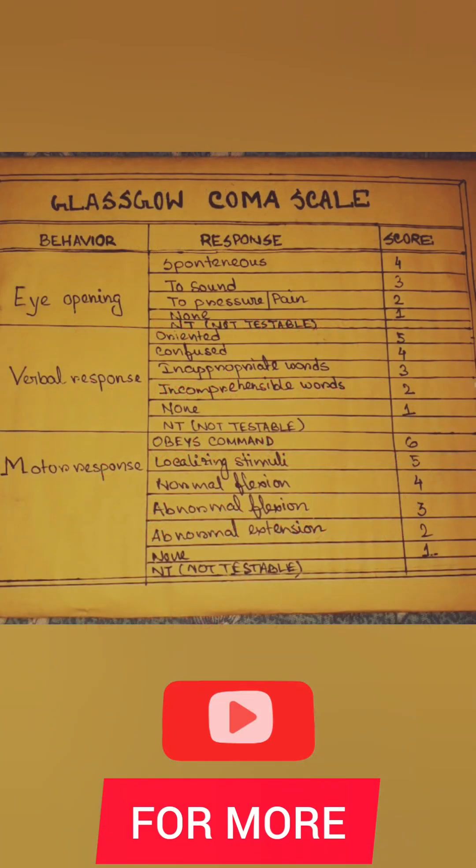Here I have given total Glasgow Coma Scale. You can see here eye-opening score 2, that means if you give pressure or pain, the patient will open his eye.